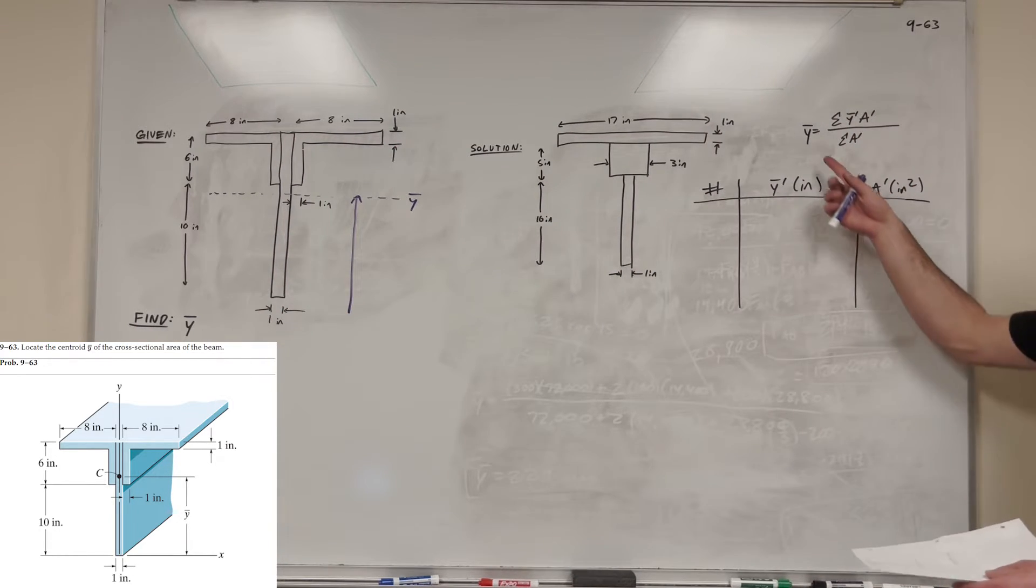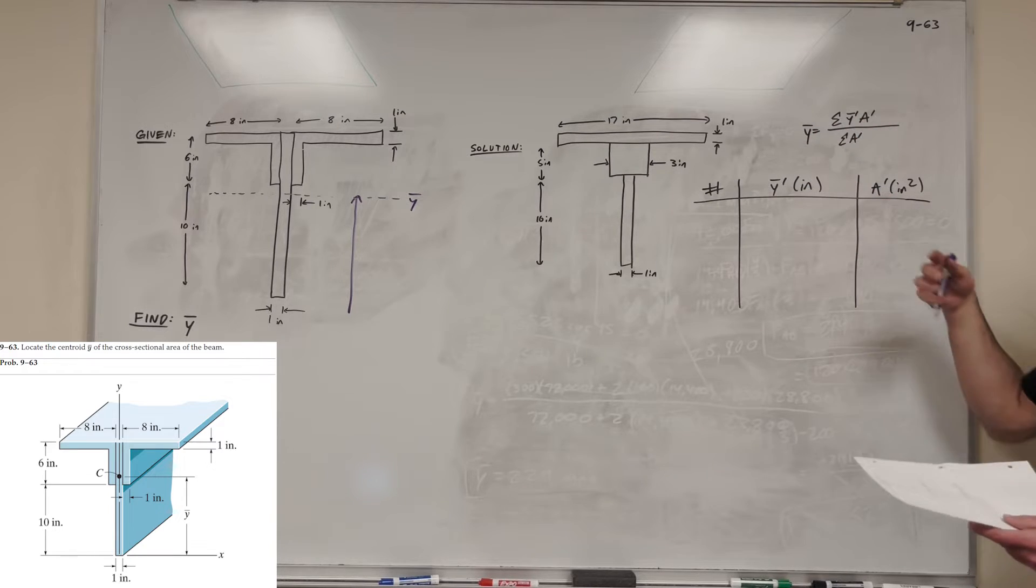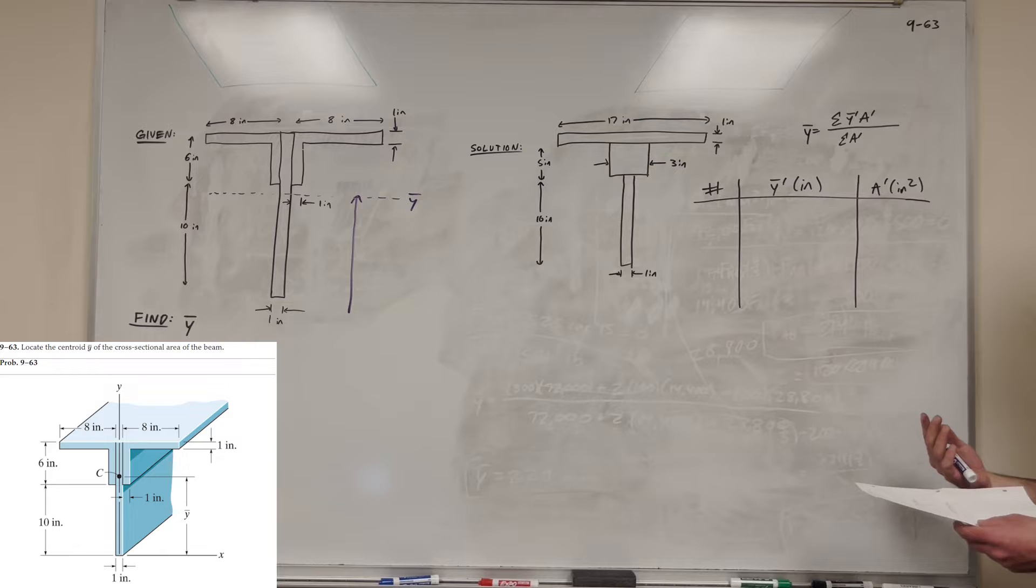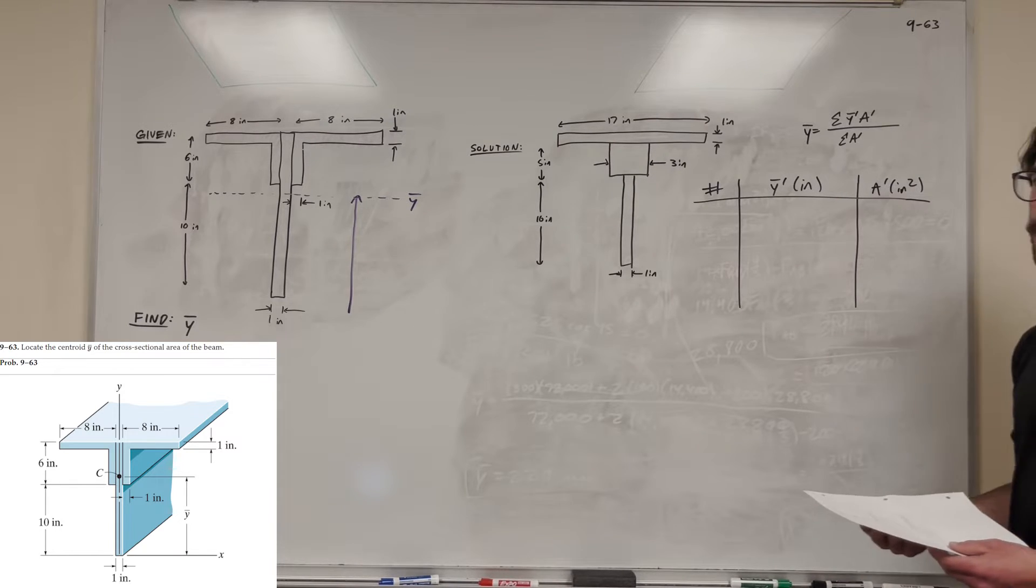Well, we're going to use our equation for the center of mass. So this equation tells us to break up our shape into different areas and find the center of mass for each and area for each. So let's go ahead and do that.